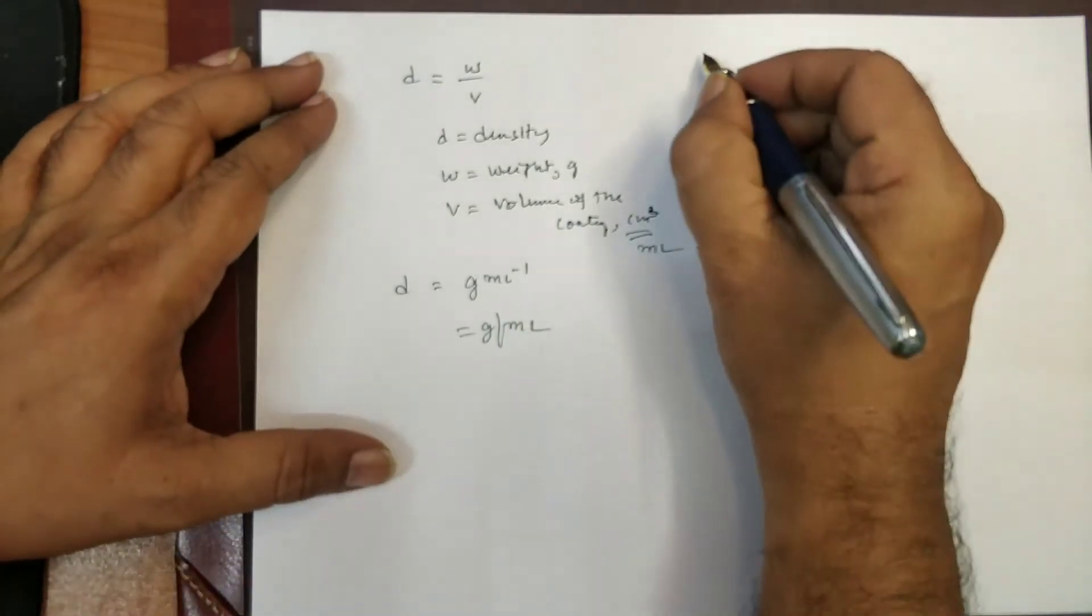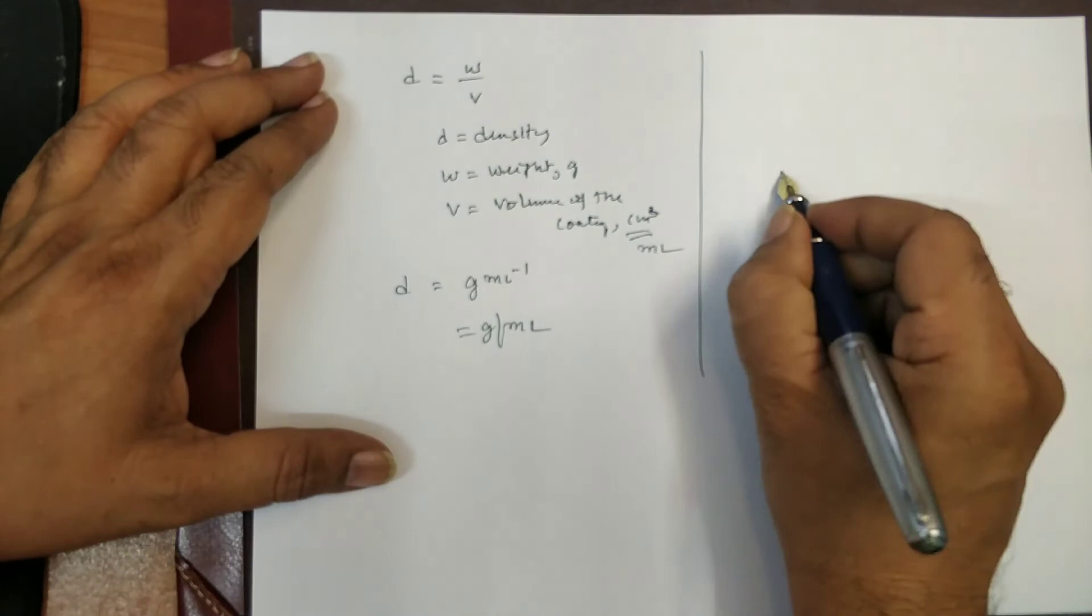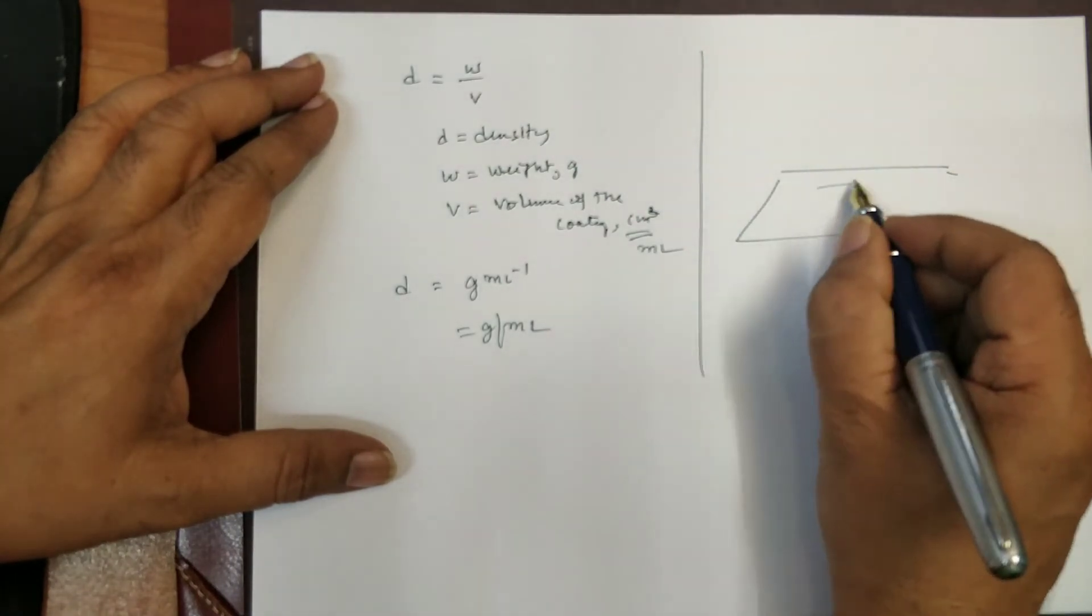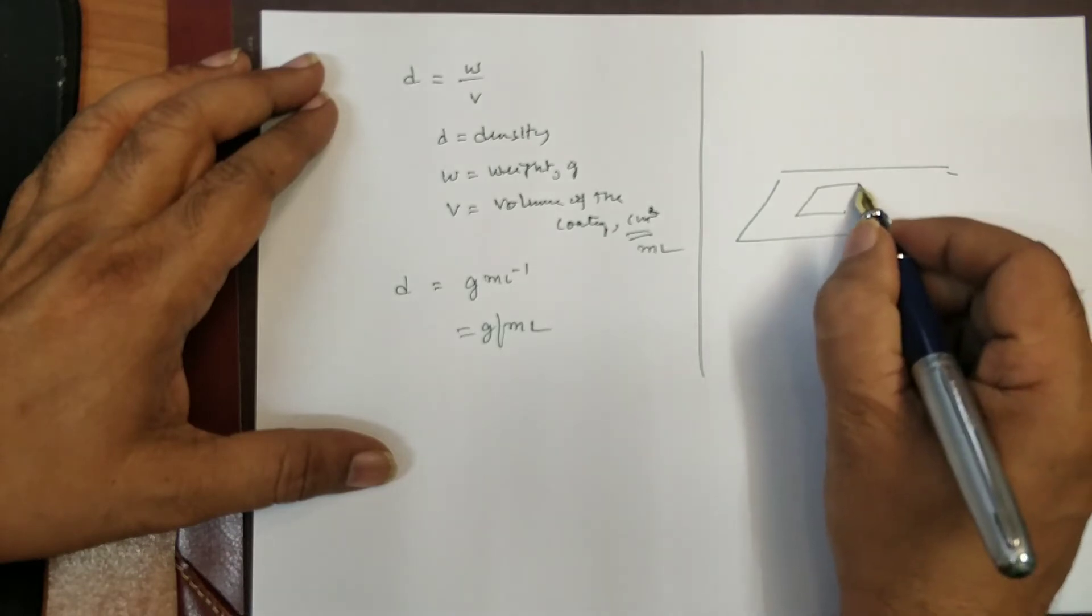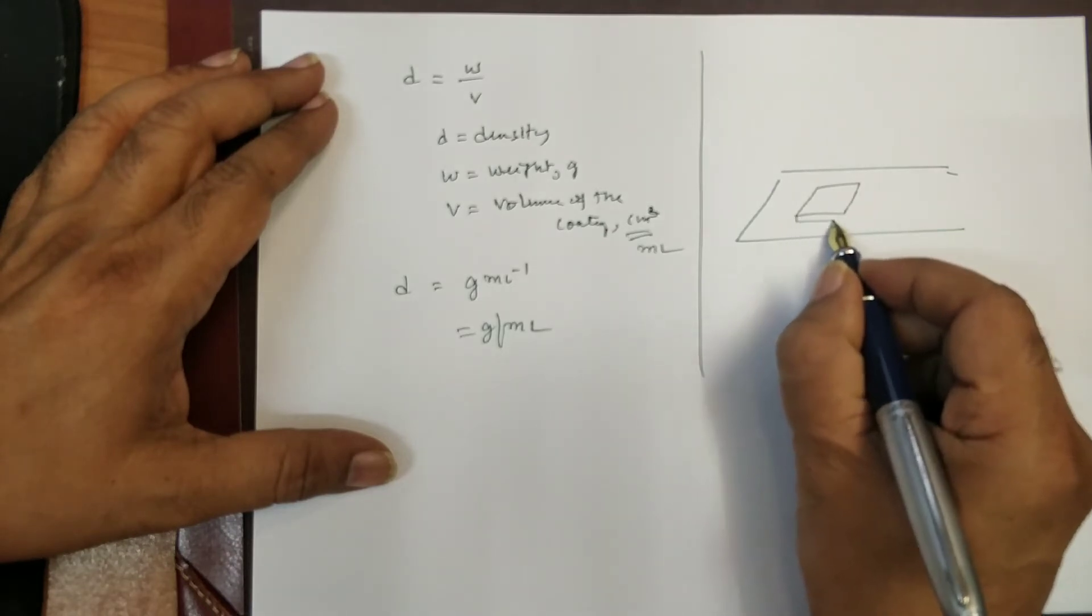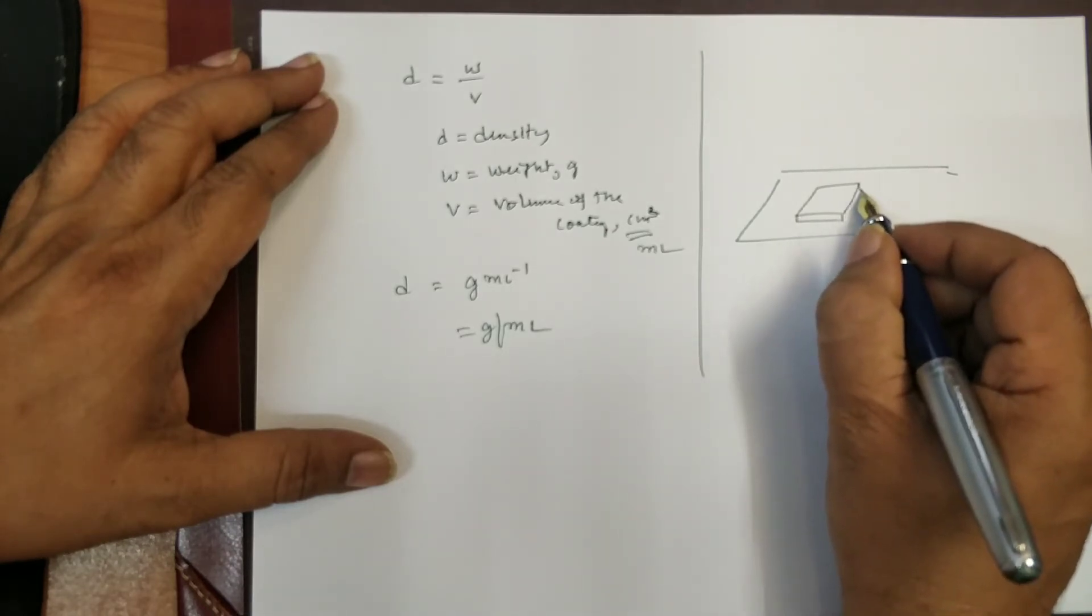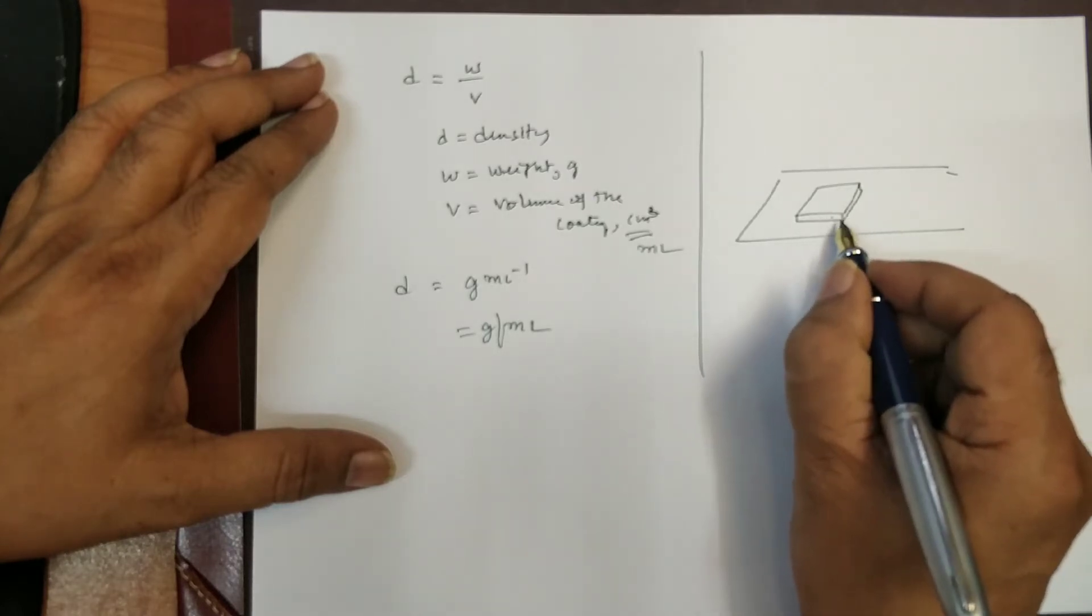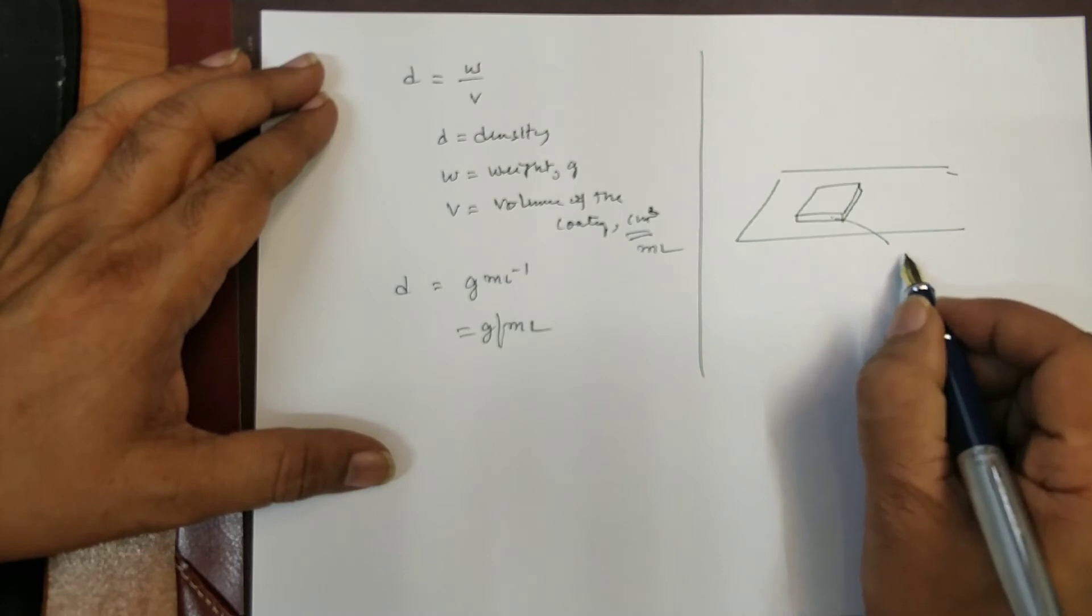Now, here, let me consider, this is my mild steel panel where I have got the coating like this. Let me consider one square inch like this, one square centimeter. Okay. So, this is the height of the coating. That is thickness of the coating. Let me call it T.